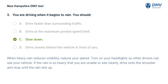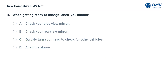If the rain is so heavy that you are unable to see clearly, drive onto the shoulder and stop until the rain lets up. When getting ready to change lanes, you should: A) check your side view mirror, B) check your rear view mirror, C) quickly turn your head to check for other vehicles, D) all of the above.